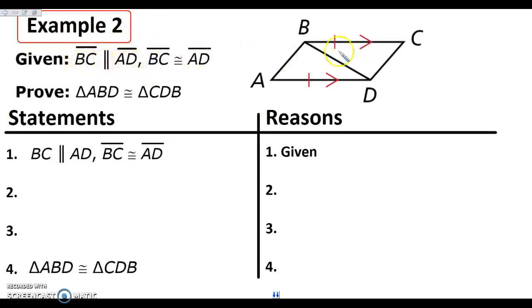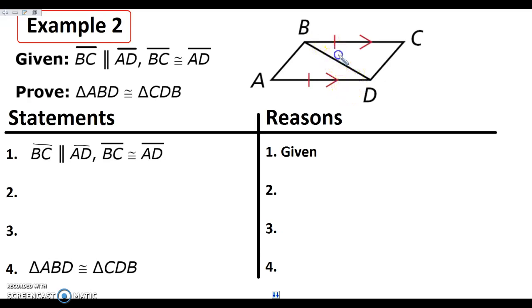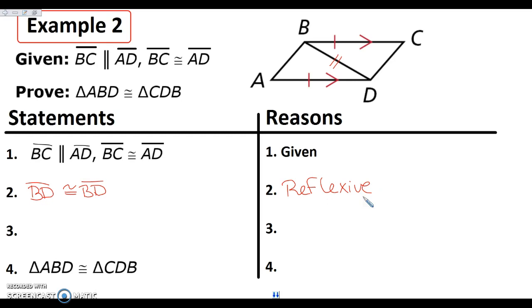We are given that BC and AD are parallel — notice that is marked on the picture — and we are also given that BC and AD are congruent. So the first thing I want you to do when you see these two triangles, because I'm trying to prove that triangle ABD and triangle CBD are congruent: do they share anything? They share a side. So write that BD is congruent to BD by the reflexive property. Anytime your triangles share a side, I want to see that step right away.